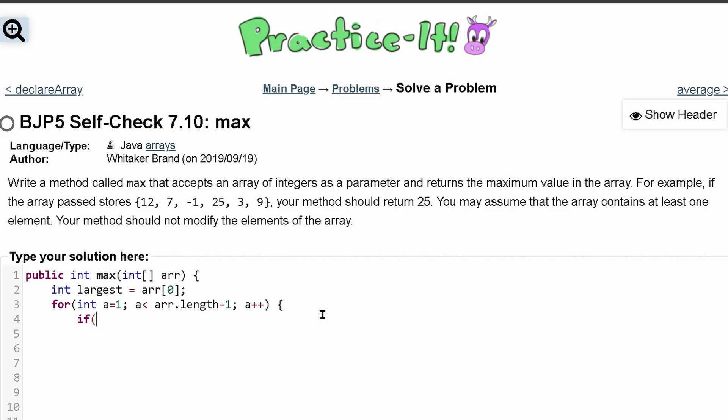So if the largest right here is less than arr looking at our current index, so that's going to be held in a,